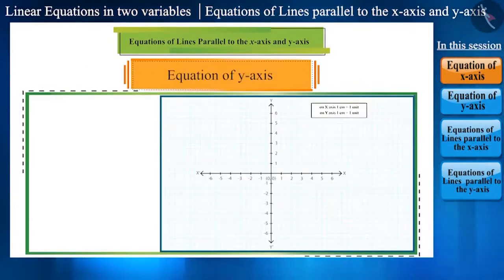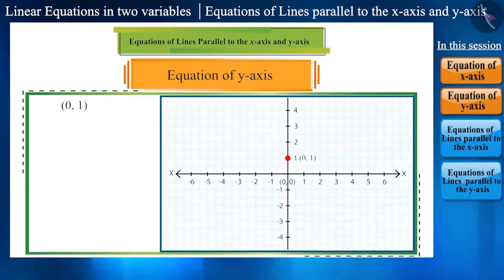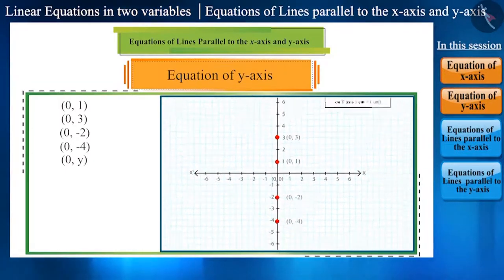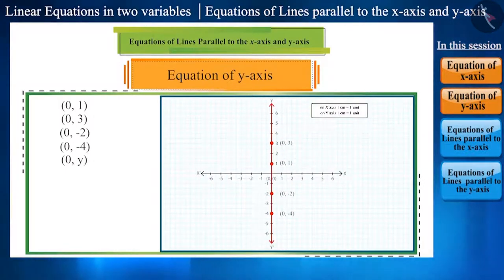Friends, what will be the coordinates of the points lying on the y-axis? (0, 1), (0, 3), (0, 2), (0, 4), or we can say that it will be in the form of (0, y). That means, y-axis is the line with all the points lying on it having their x-coordinate as 0.